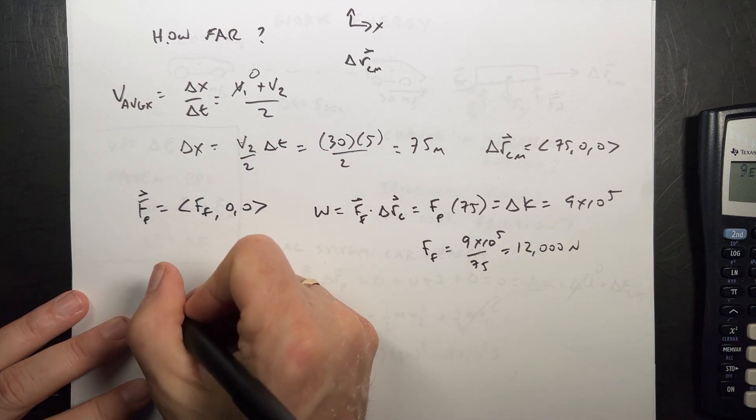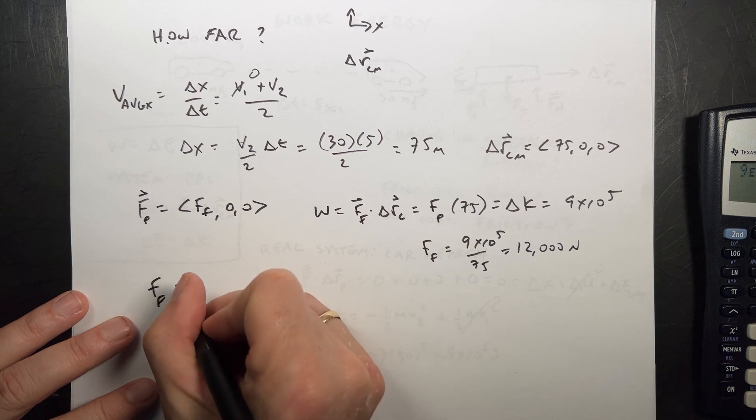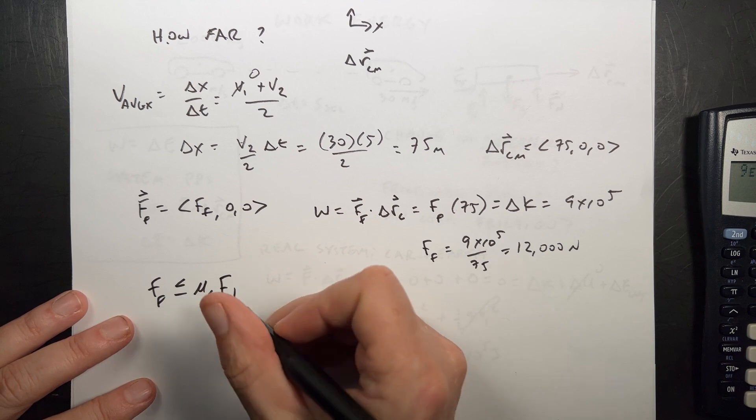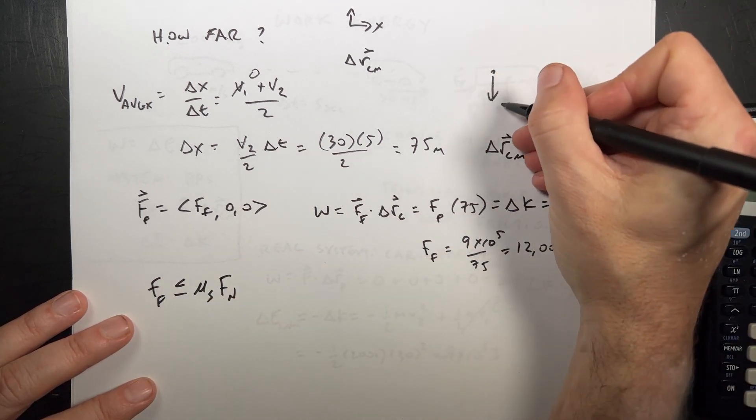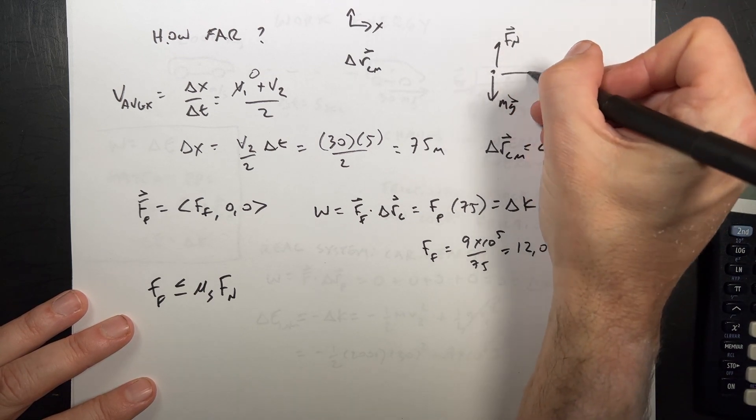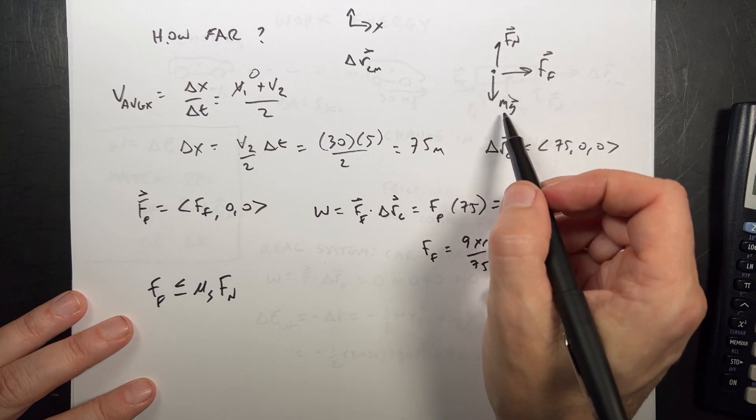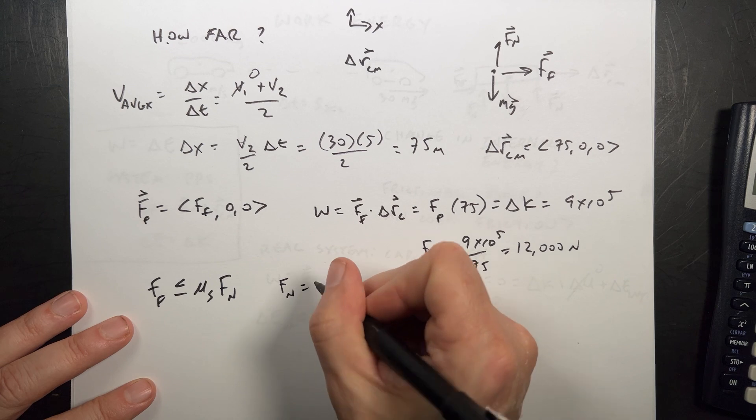If I use the standard model for the static frictional force, the frictional force is less than or equal to some coefficient of friction times the normal force. And in this case, the normal force, if I just draw this, mgfnf friction, the normal force plus gravitational force in the y direction has to be equal to zero. So fn is equal to mg.